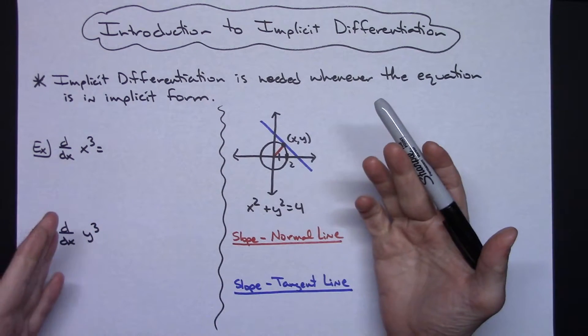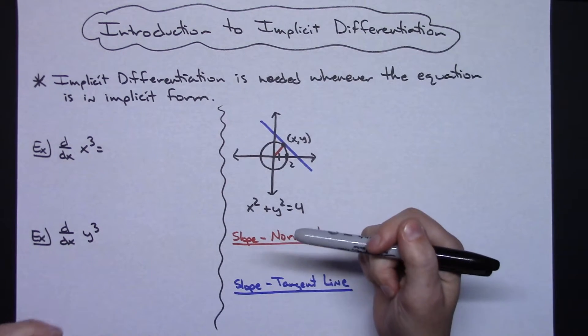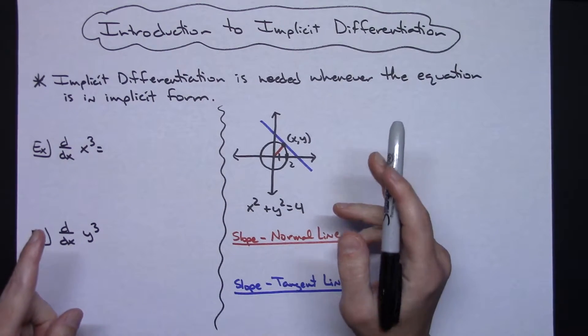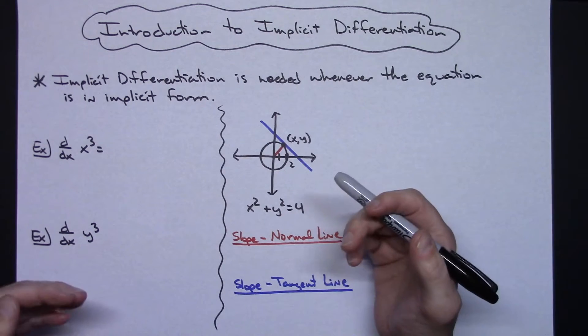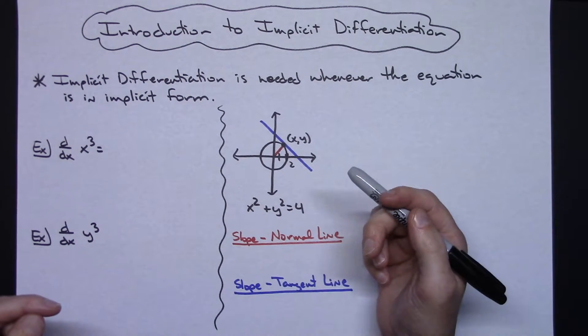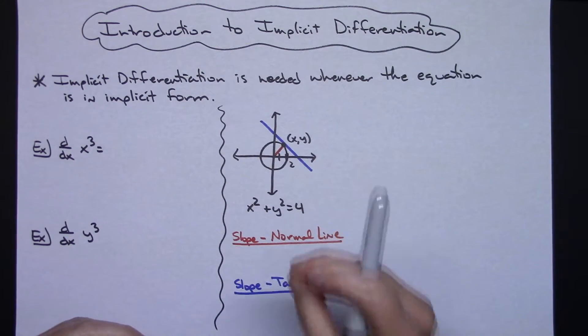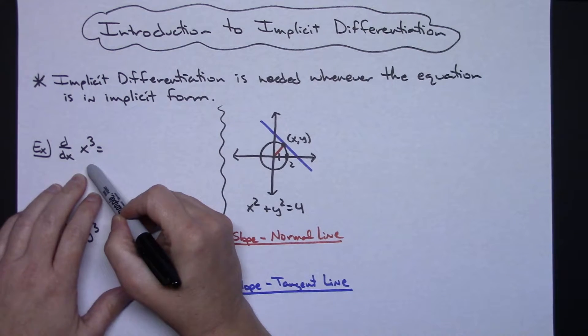Now to find the derivative implicitly, you need to realize that the differentiation is taking place with respect to x. This means that when you differentiate terms involving just a plain x, the x's alone, you can differentiate as usual. However, if you differentiate terms involving a y, you must apply a chain rule.